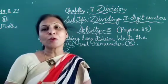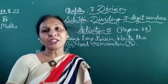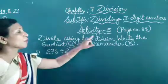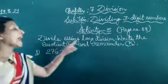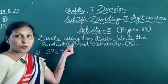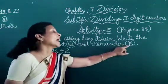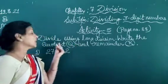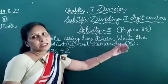Good morning dear students. Today I am going to start activity 5: divide using long division, write the quotient and remainder. The short form of quotient is Q and for remainder we write R. First we mention that quotient is Q and remainder is R.